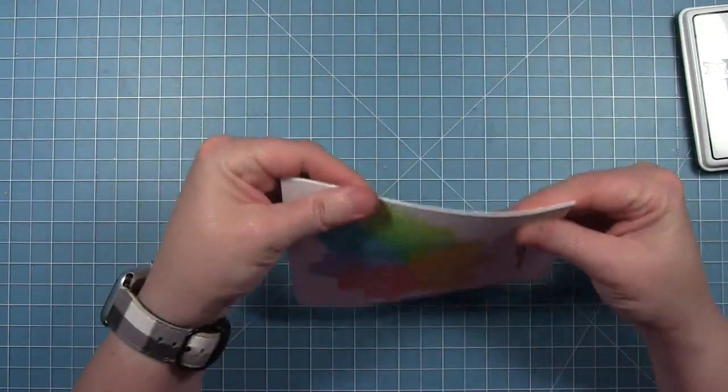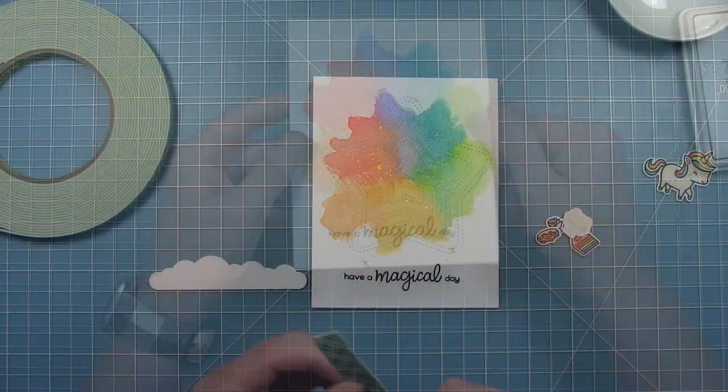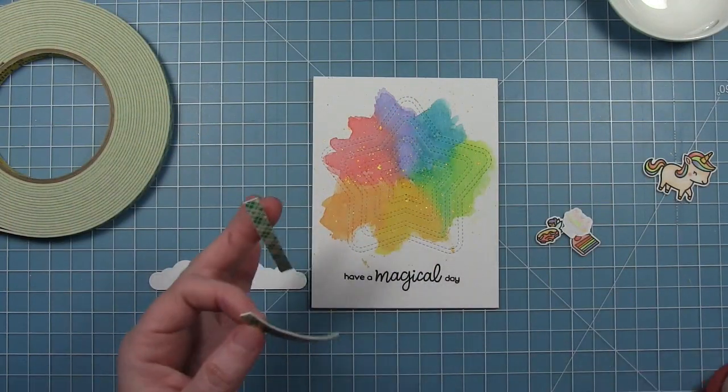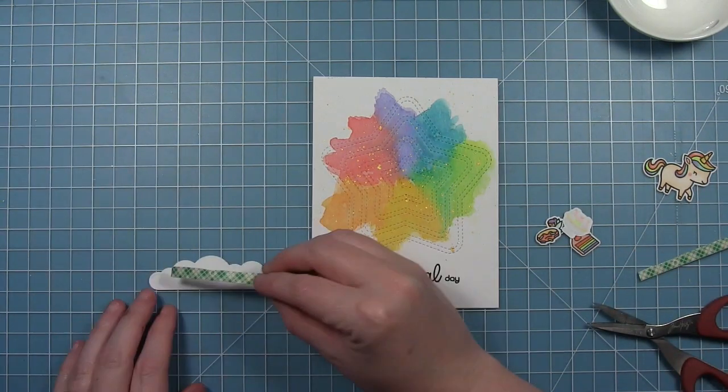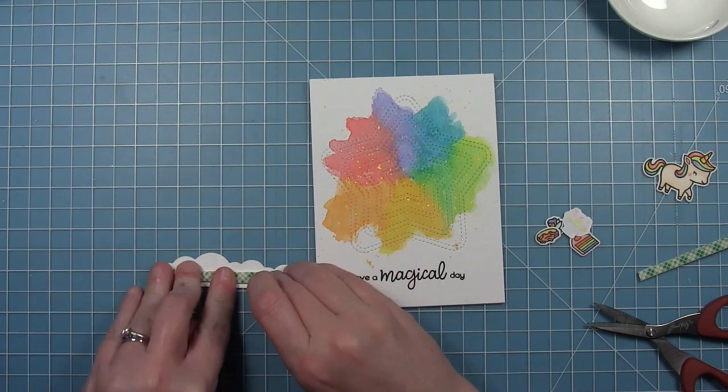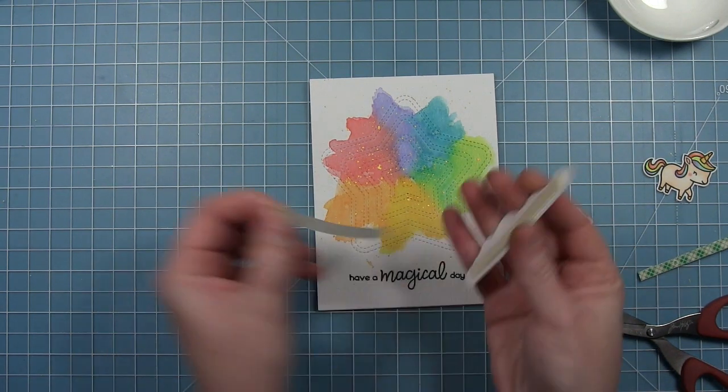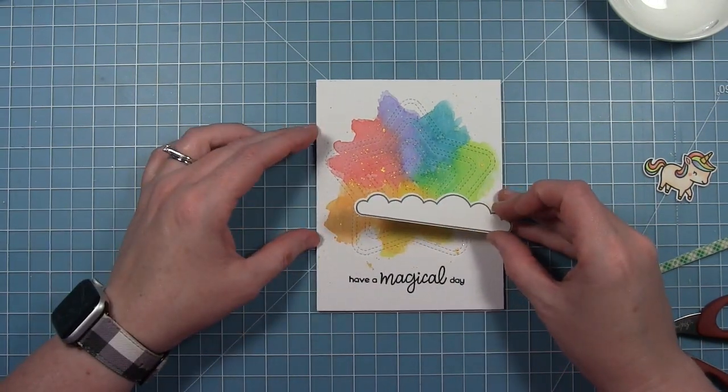So now that I have that on my card I can start to decorate it with the images that I've already colored and cut out with my coordinating dies. So I'm using images from Unicorn Picnic and I'm going to start and base everything on that long cloud that comes in the set. So I'm just putting a piece of foam tape across the back of that long cloud and this is going to be sort of the ground for all my other little elements that I'm going to add.